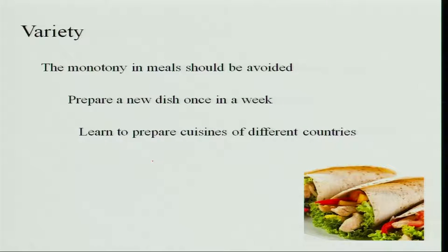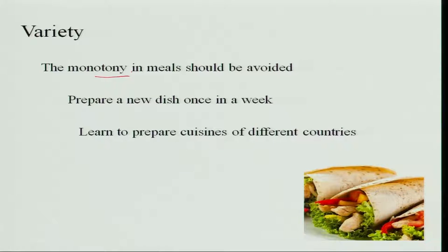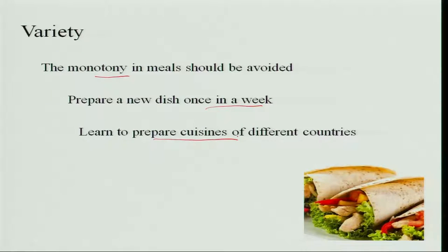We also need variety in the meal. If the meal is monotonous — for example, some families cook food in the morning and eat the same food in the afternoon and at night — people lose interest in eating. Monotony in meals should be avoided. To avoid monotony, try to prepare a new dish at least once a week so that family members will look forward to it. Also, learn to prepare cuisines of different countries, as always using the same cuisine from one's area becomes monotonous. Trying new cuisines creates a lot of interest in tasting those foods.